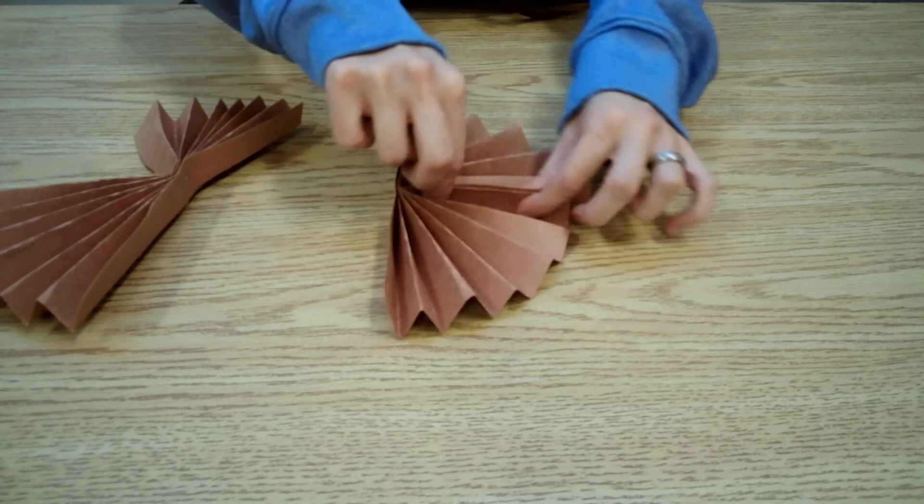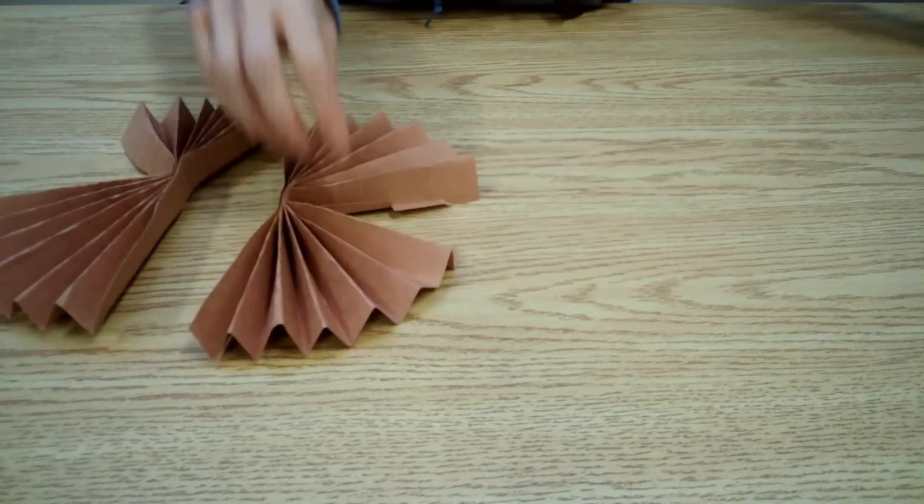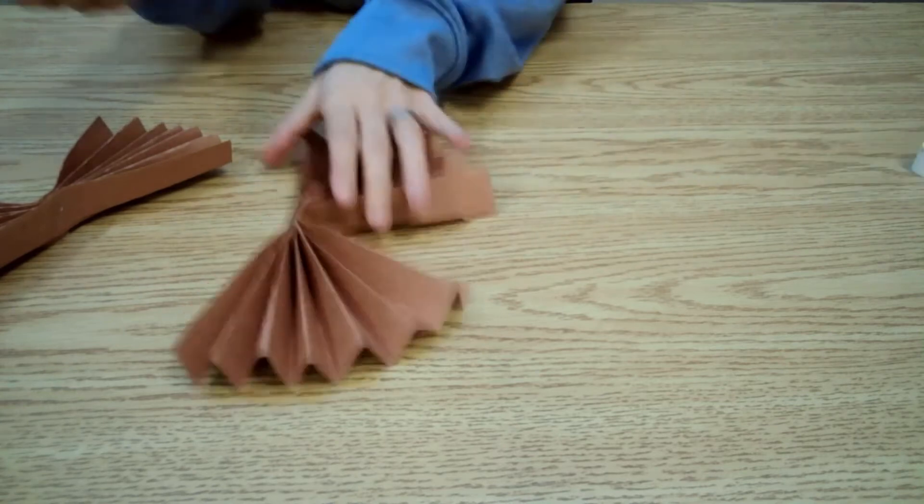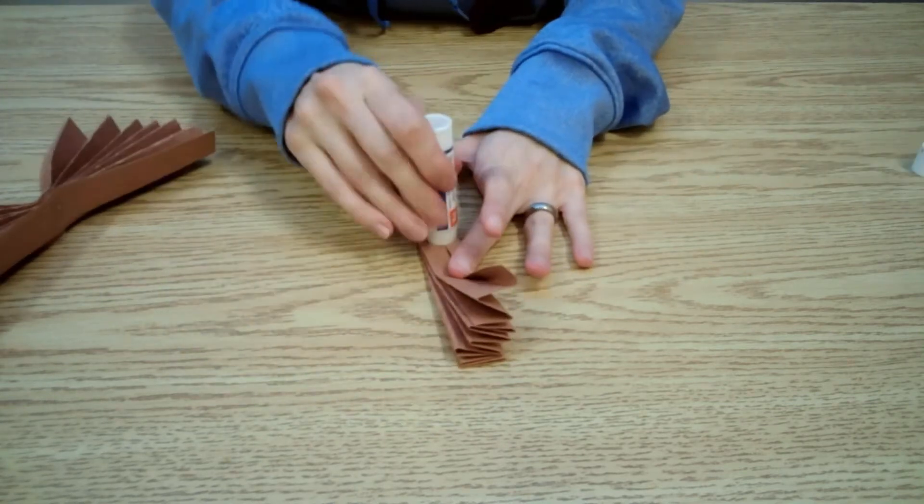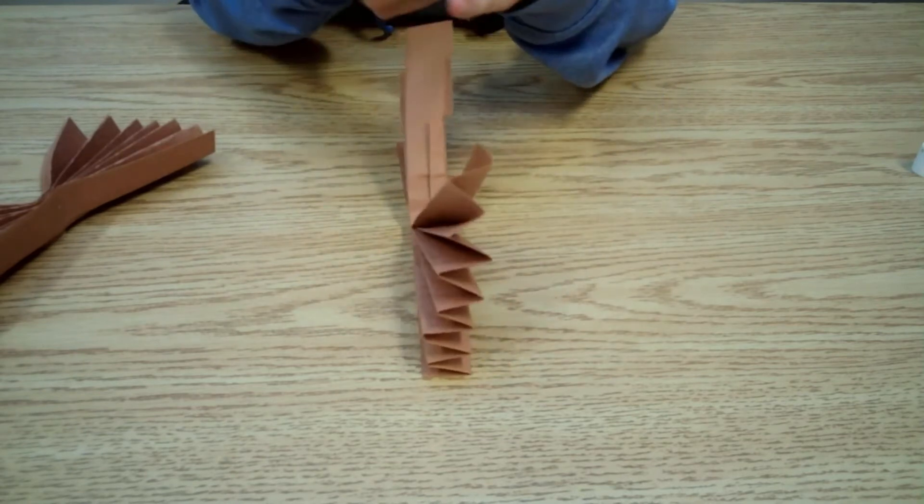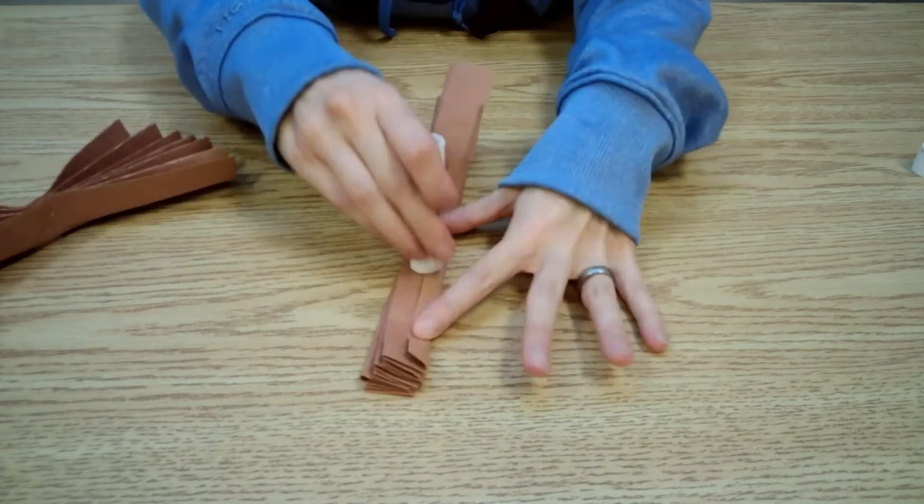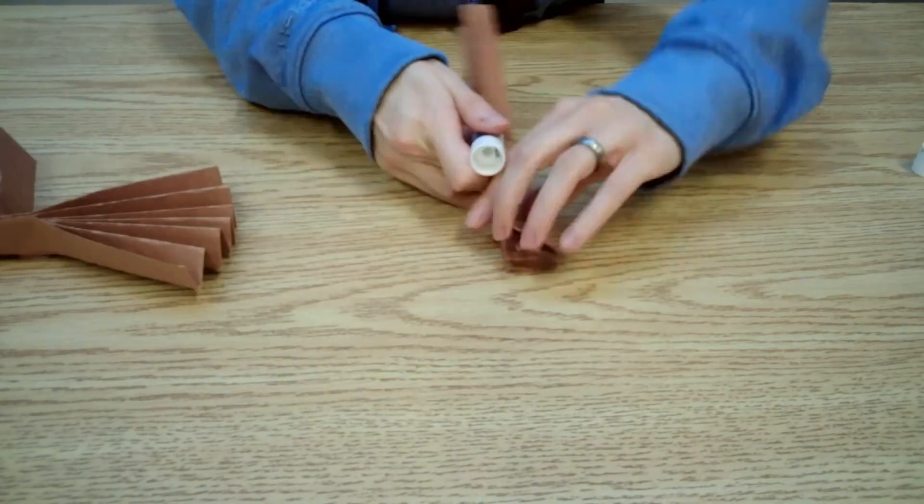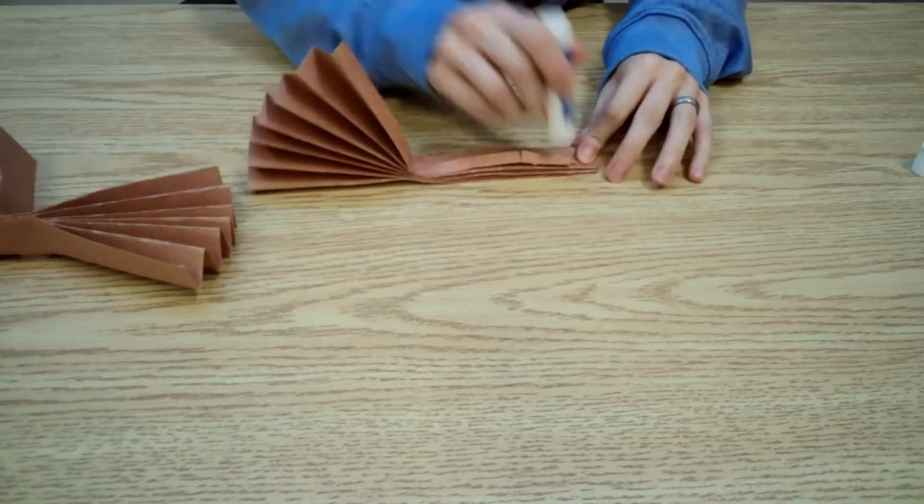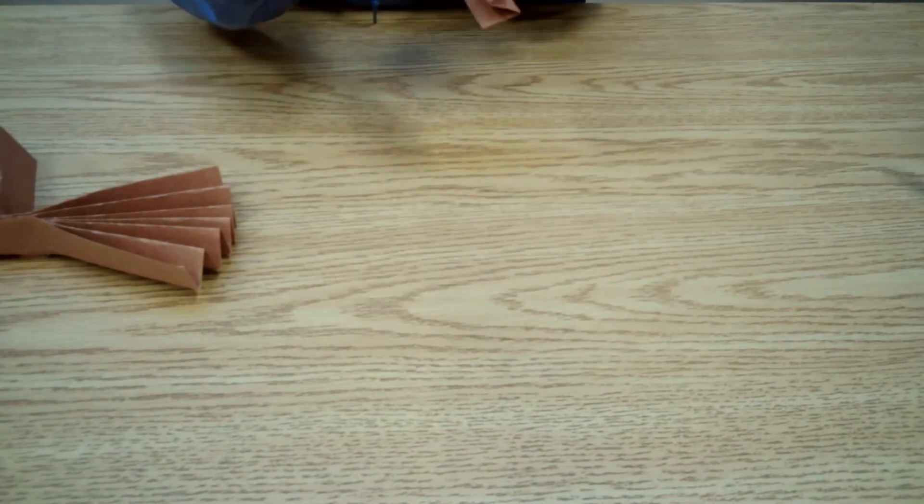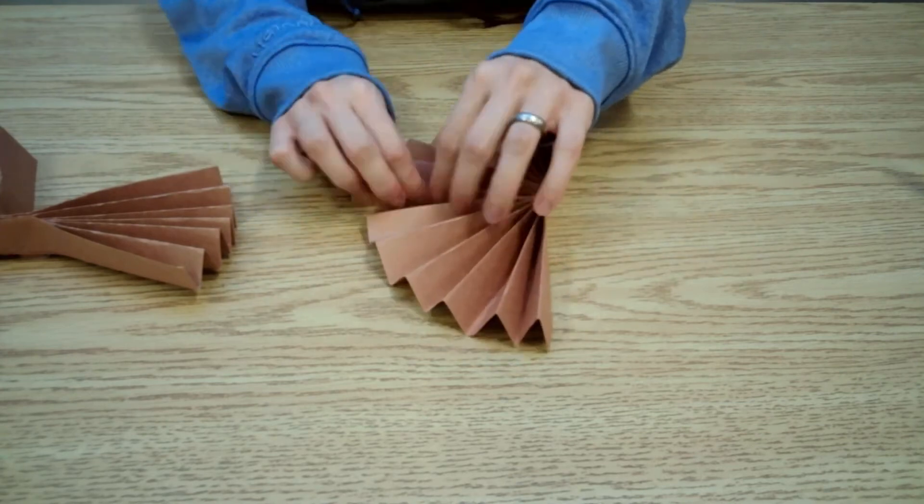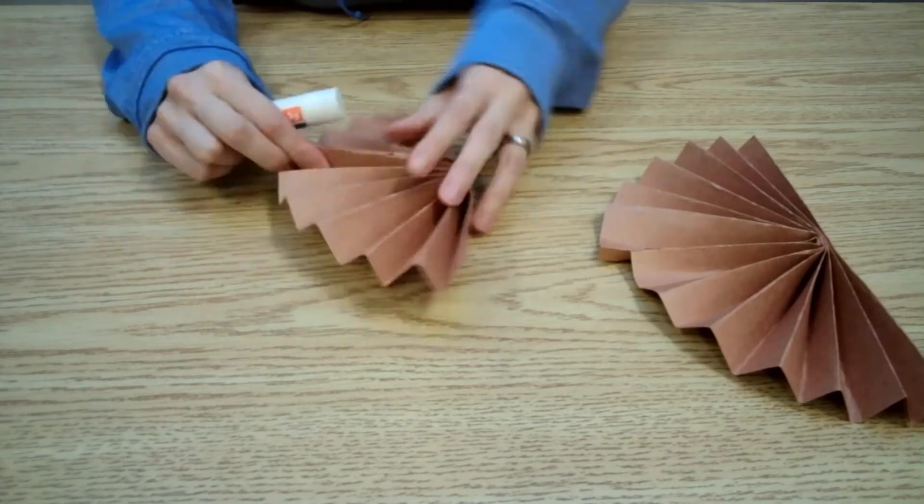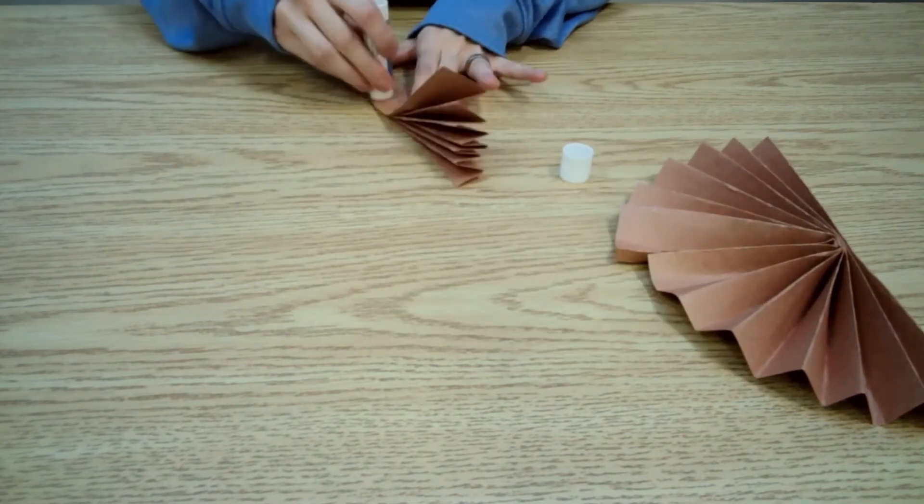Now that both pieces are folded and stapled, we will glue them together. Use a glue stick and glue the stapled side of each of the folded papers. Hold and press the glued sides together until they stay together on their own. Repeat with the other folded piece of paper.